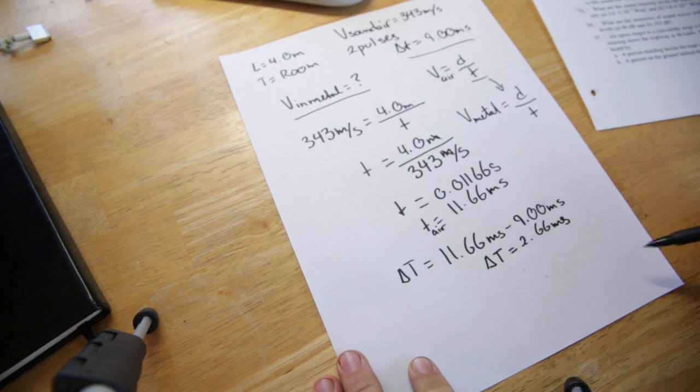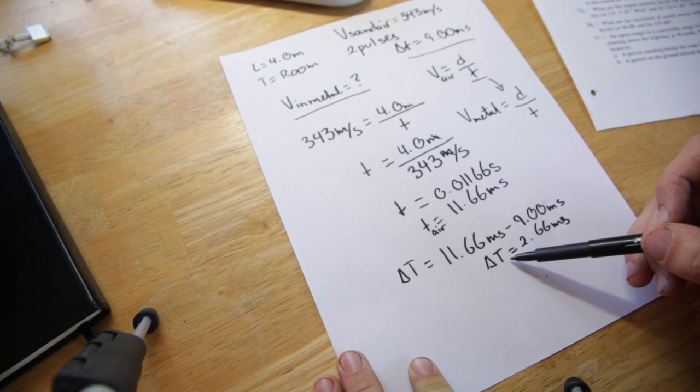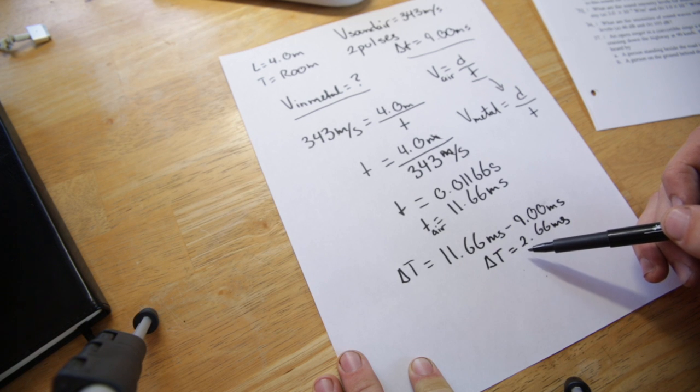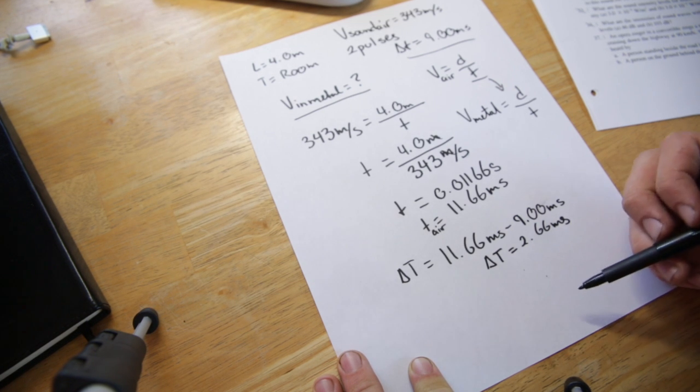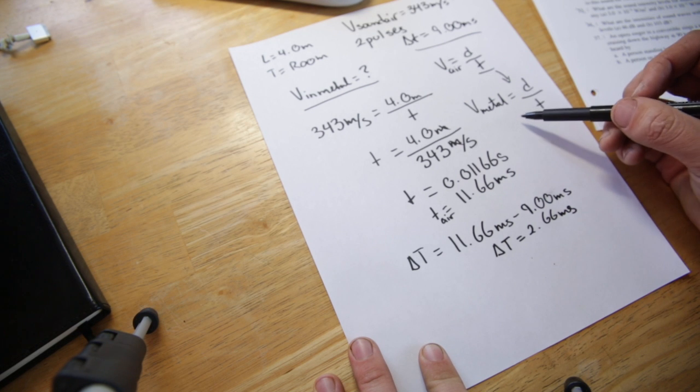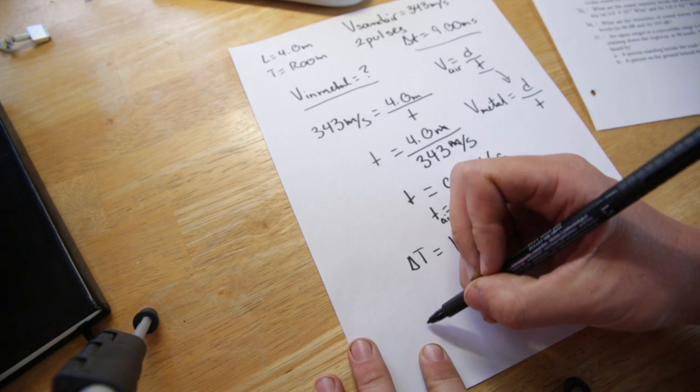So now that we have this value of t which will be representative of the time spent in the air for the wave in the metal, we can include that into our new equation which is v metal equals d over t.